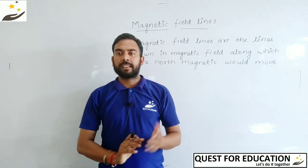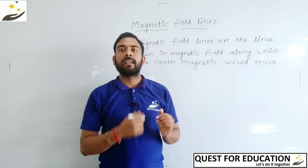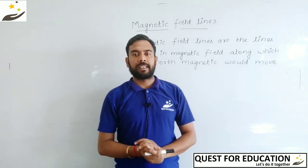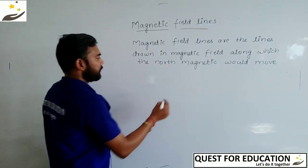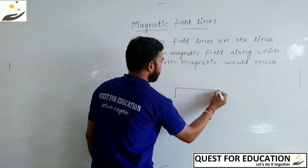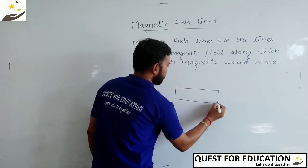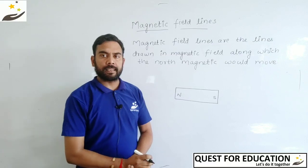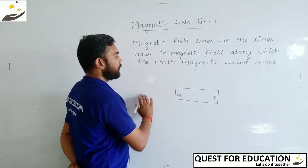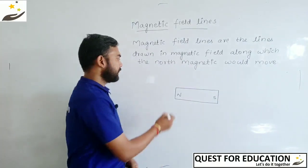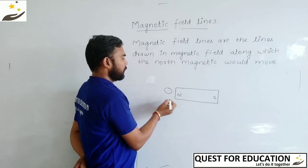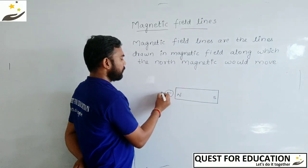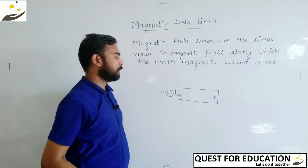The north magnetic pole, which is the compass north pole — the direction we move will be our direction of magnetic field lines. We can represent magnetic field lines with the help of a compass. We have a bar magnet that has two poles: one north pole and one south pole. When we have practicals, we keep the compass at different points like this.